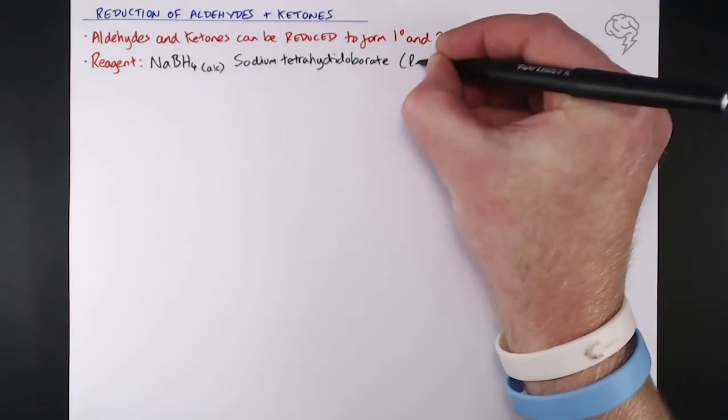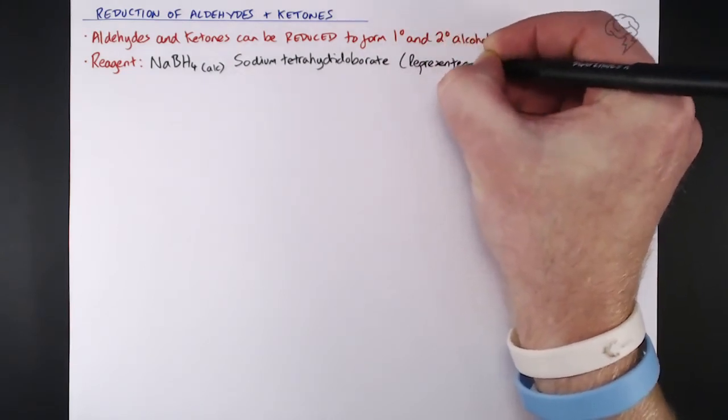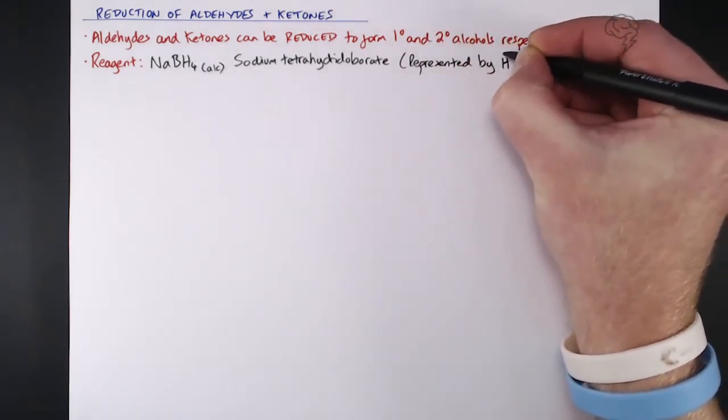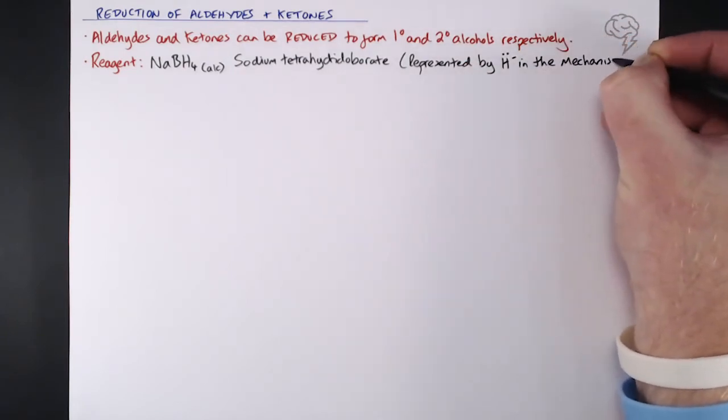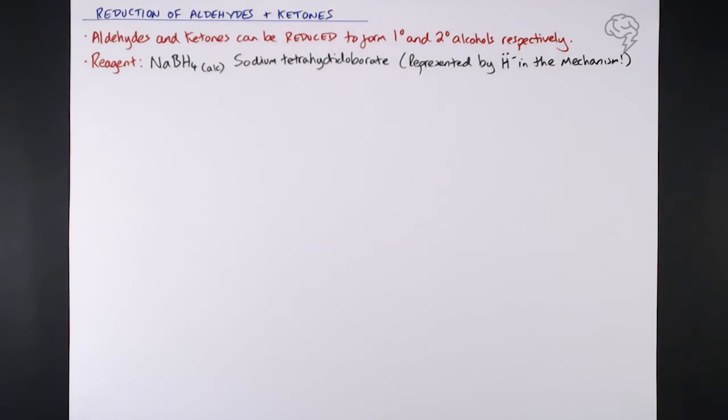The full thing isn't actually used in the mechanism - it's represented by the H minus ion, a hydrogen atom that's gained an electron, so it's got two electrons, a lone pair. This is a nucleophile.